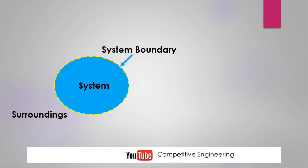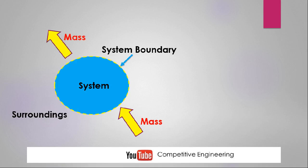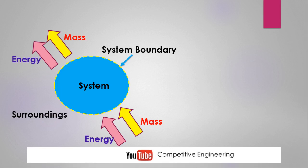Systems are of mainly three kinds: the first one is open system, the second one is closed system, and the third one is isolated system. The classification of systems is based upon the interaction with the surroundings. In an open system, both energy and mass can enter and leave the system.